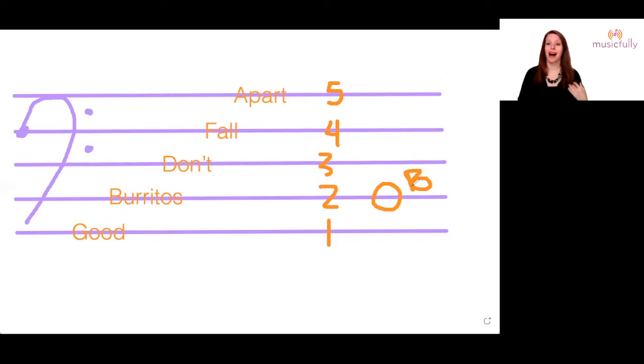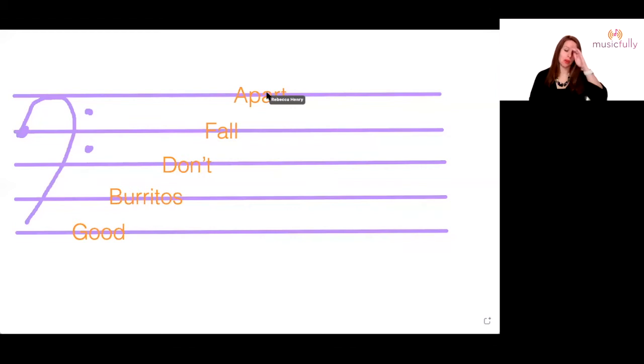Alright. I'm going to make it a little bit more challenging. Before I erase everything, you tell me, say that mnemonic one more time, the sentence. Okay. So we got good burritos don't fall apart. Can you say it one more time? Good burritos don't fall apart. Okay. There are plenty of other sentences that other teachers use. So if you're a teacher uses another one, totally cool. No problem. Sometimes people do good boys do fine always. There's tons of them out there. I just like good burritos don't fall apart. Cause I like a good burrito.